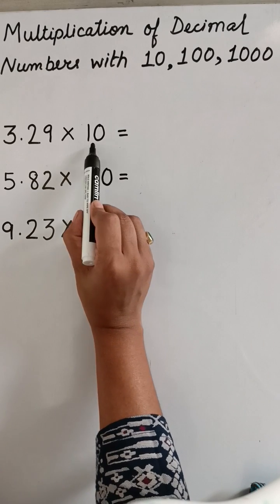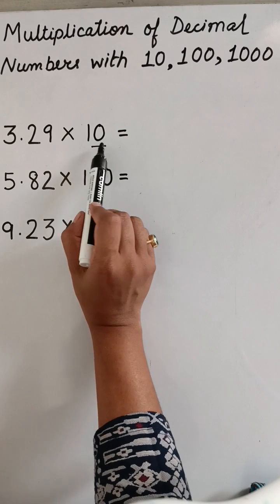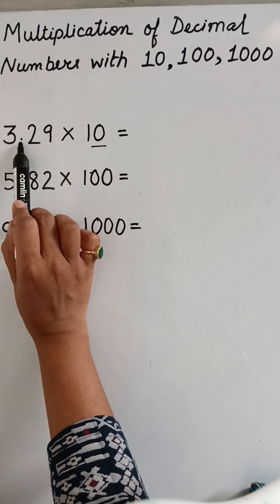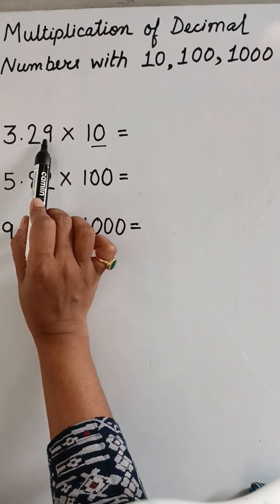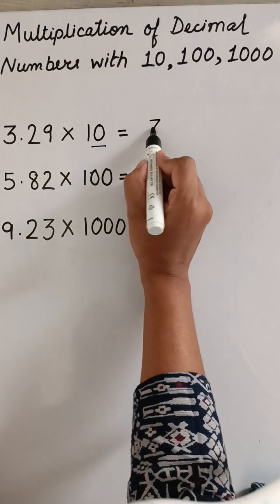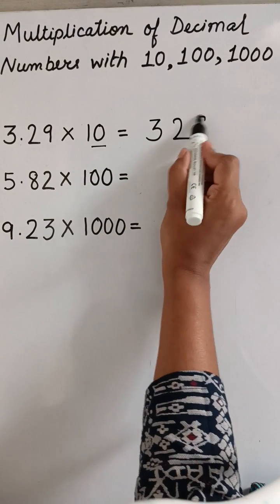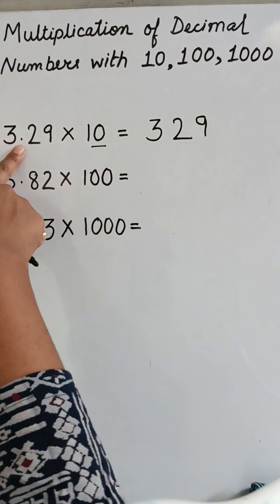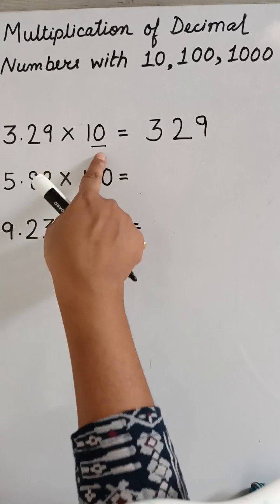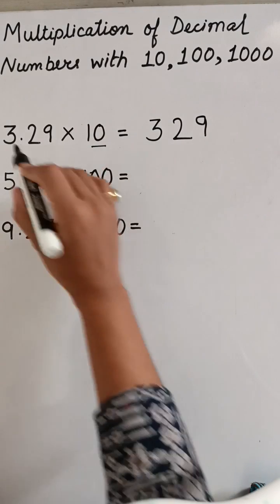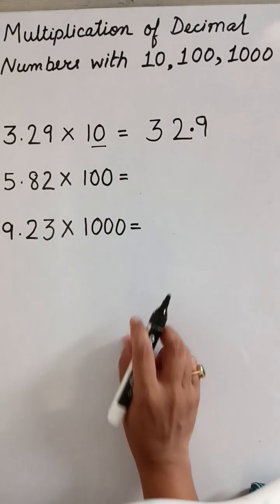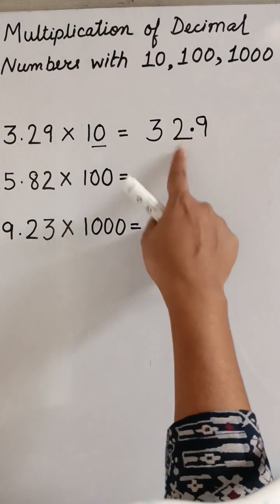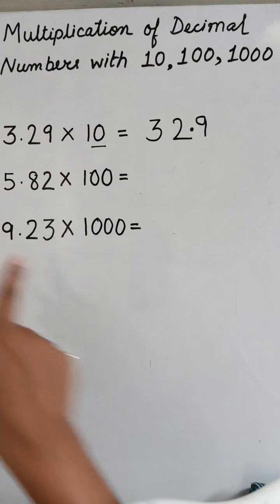This 10 has one zero, so the decimal point will also shift by one digit to the right-hand side. The answer will be 329. This decimal point will shift by one digit because only one zero is there, so this point will shift after two, here. So the answer is 32.9.